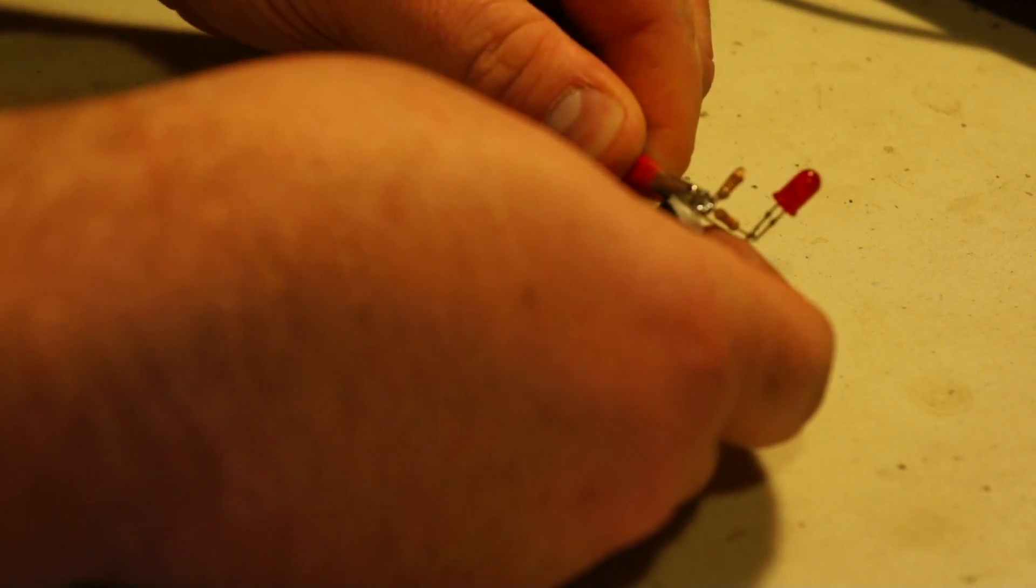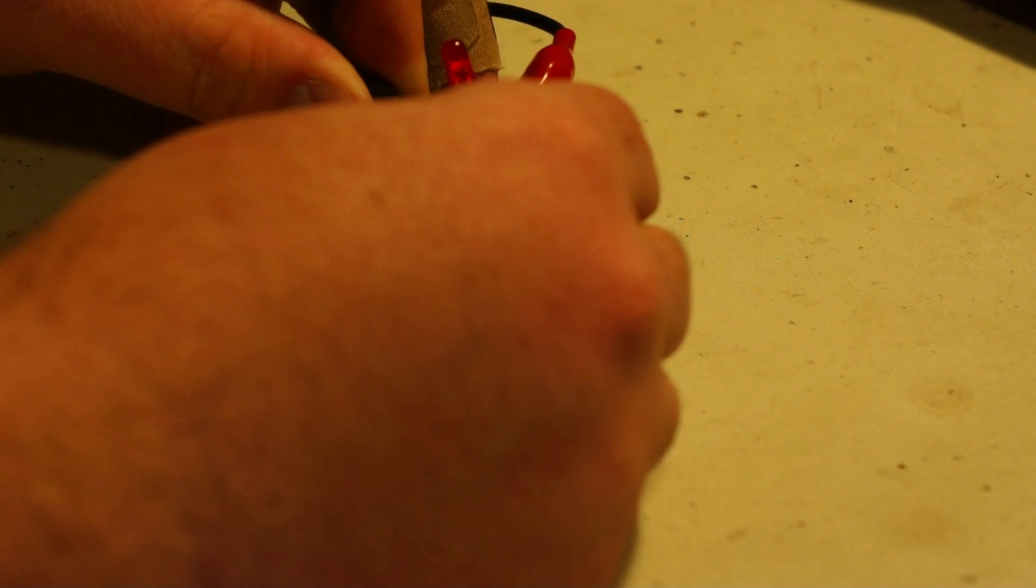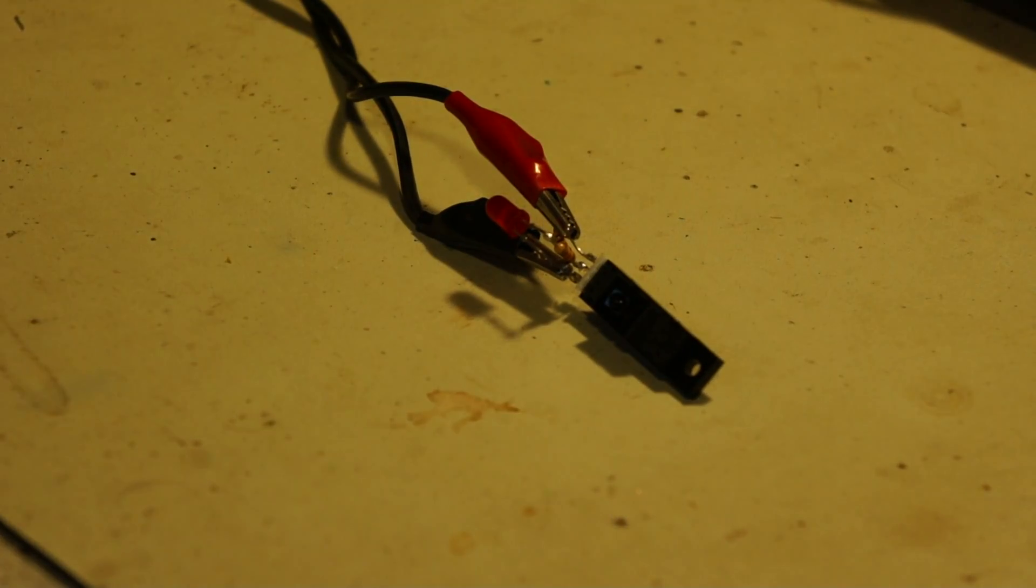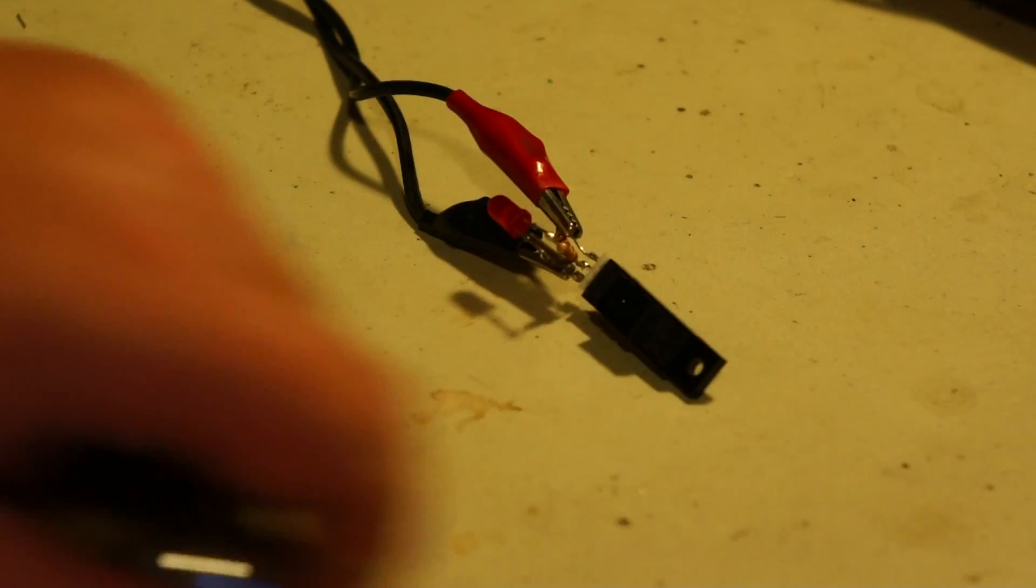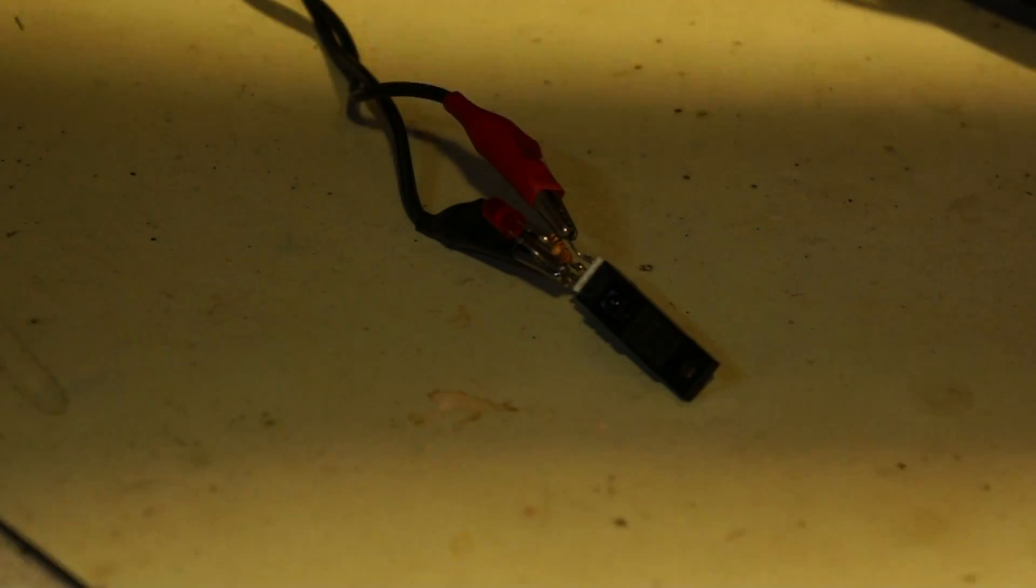So, plus 5 volts will go right there on the plus 5 volt line, and then ground will go right there. And then for an object, we'll use a pinball. So, turn on the power supply.